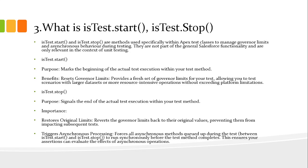Test.stopTest() marks the end of actual test execution within your test method. Its importance is that it restores the original governor limits, reverting them back to their original values, preventing them from impacting subsequent tests. It also forces all asynchronous methods queued up during the test between Test.startTest() and Test.stopTest() to run before the test method completes, ensuring your assertions can evaluate the effects of asynchronous operations.